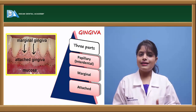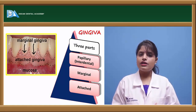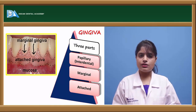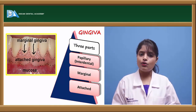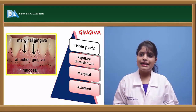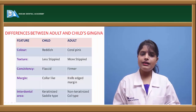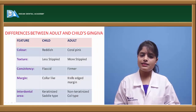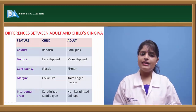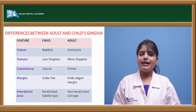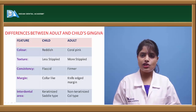The attached gingiva is continuous with the marginal gingiva and comprises certain special features known as interdental clefts. Interdental clefts are present mainly in children, in the saddle areas of the gingiva.